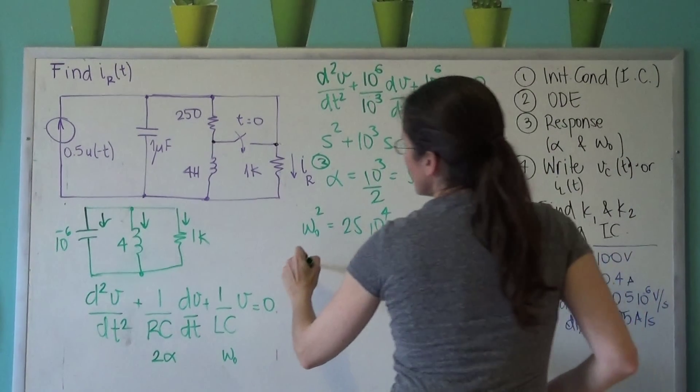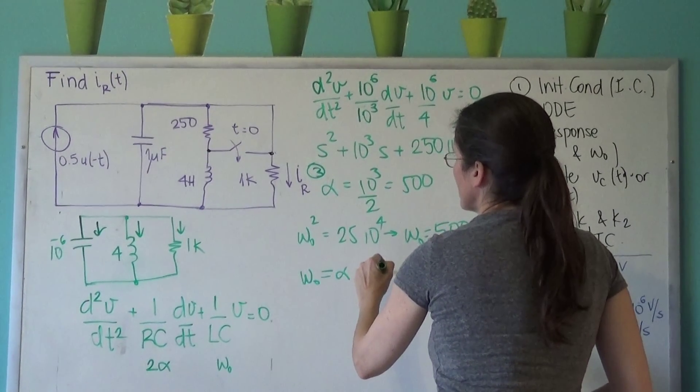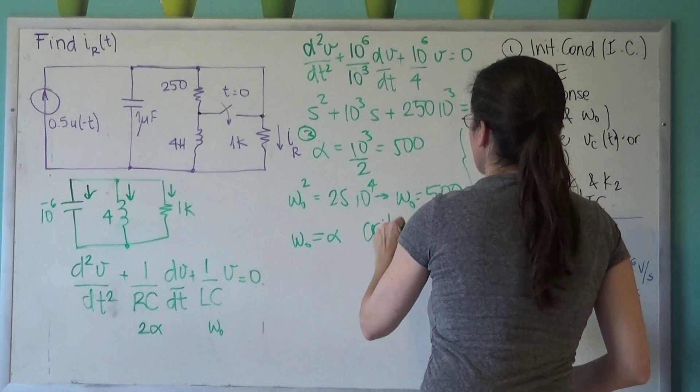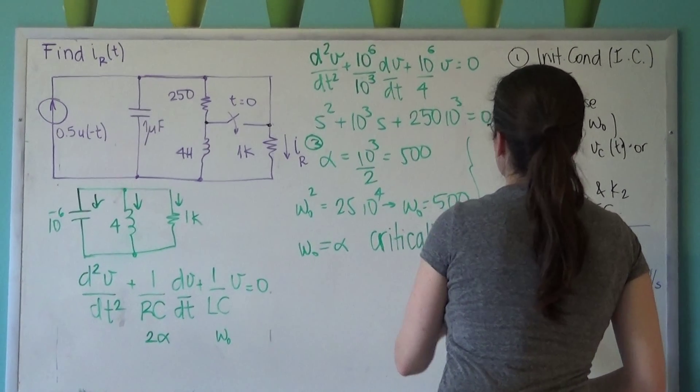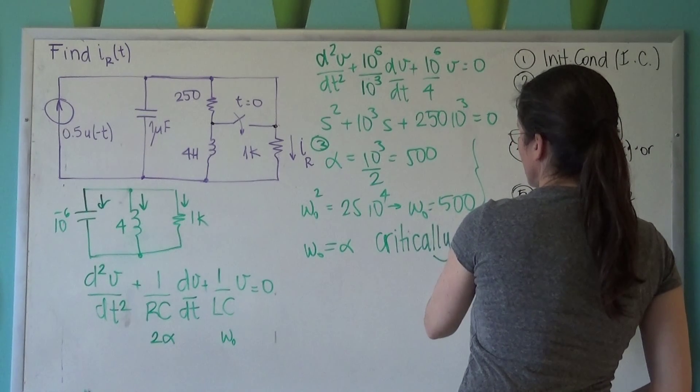Which means this circuit, because omega naught is equal to alpha, the circuit is critically damped. And this is the step, the end of step three, critically damped.